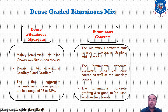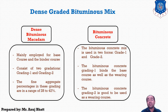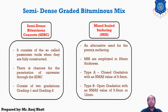To facilitate thin asphalt lifts, Bituminous Concrete Grade 1 is more suitable than Grade 2. Bituminous Concrete Grade 2 has been efficiently used in highway construction in the United States for higher traffic. Now let's discuss the semi-dense graded bituminous mix, which includes two different types: SDBC (Semi-Dense Bituminous Concrete) and MSS (Mixed Seal Surfacing).